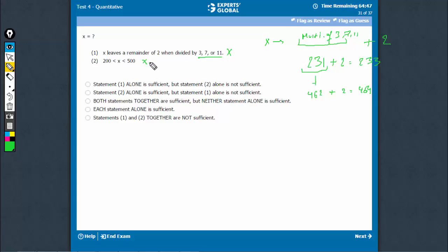Statement 2 alone is, of course, not sufficient. Exactly. There are, again, lots of possibilities. It doesn't even say that x has to be an integer. So, again, infinite number of possibilities.